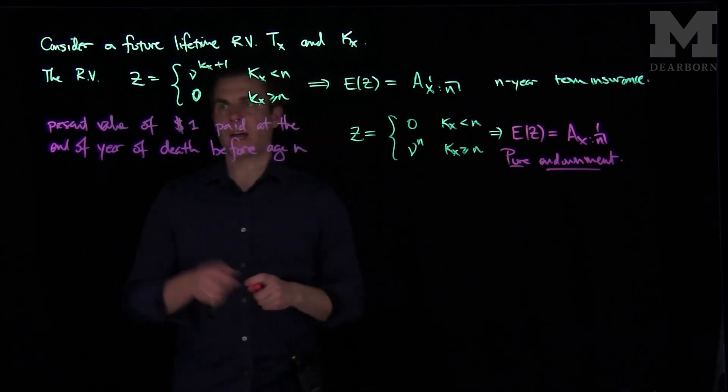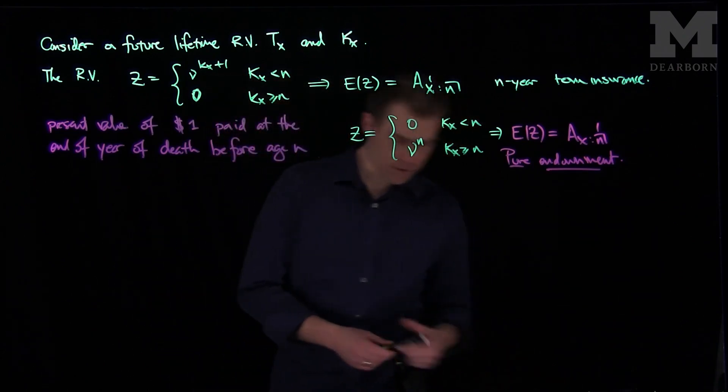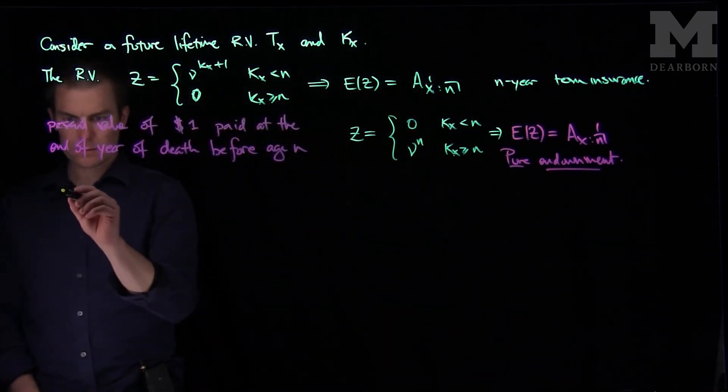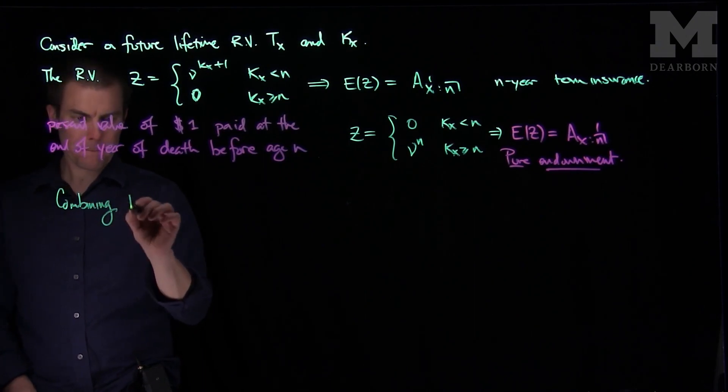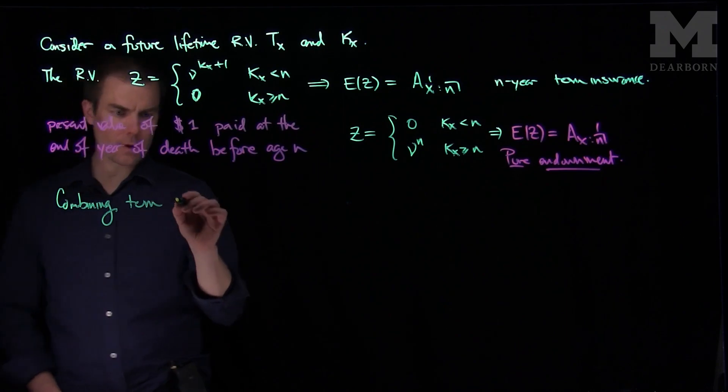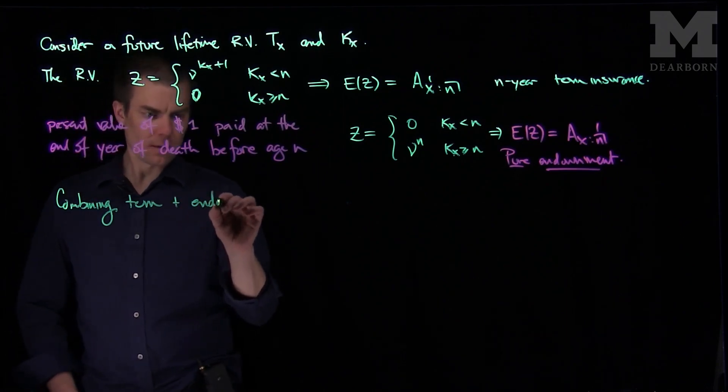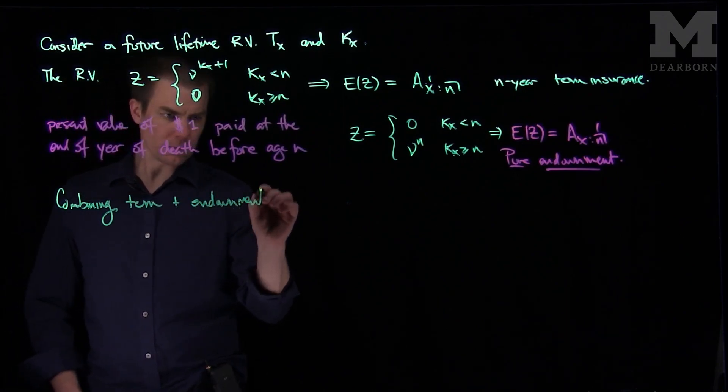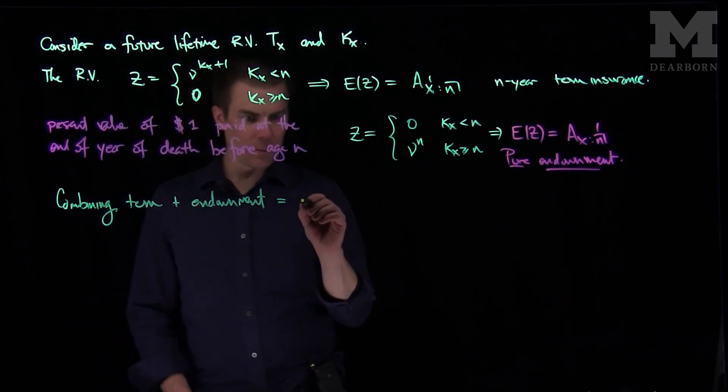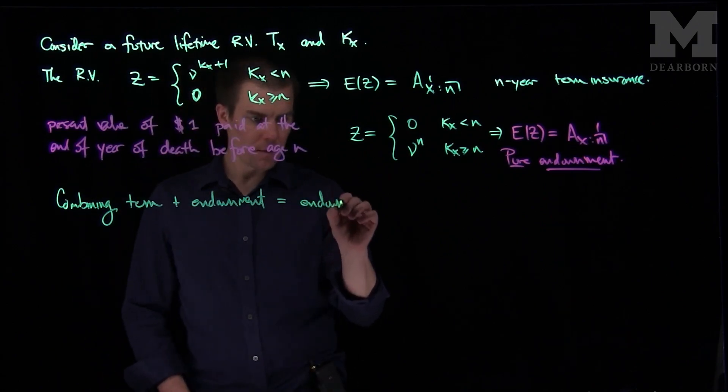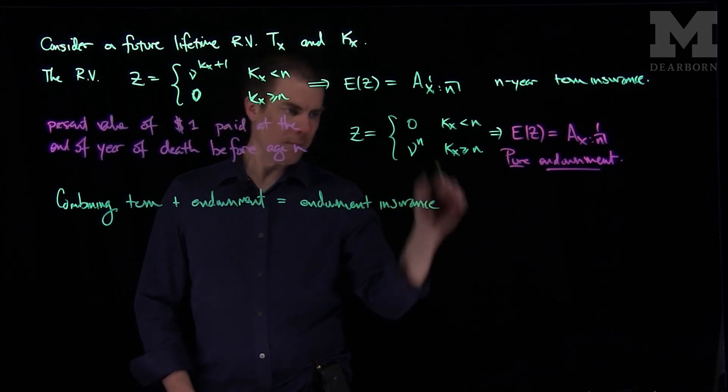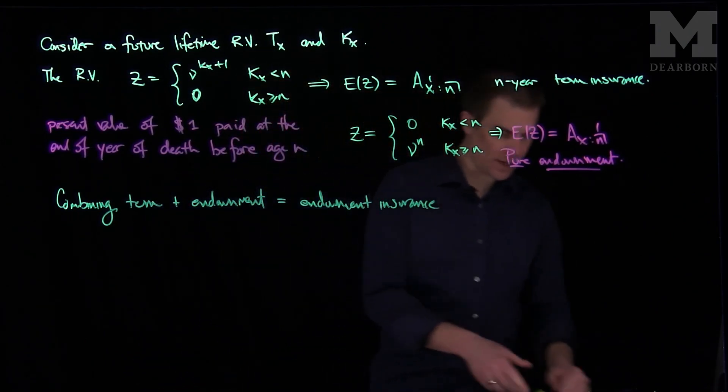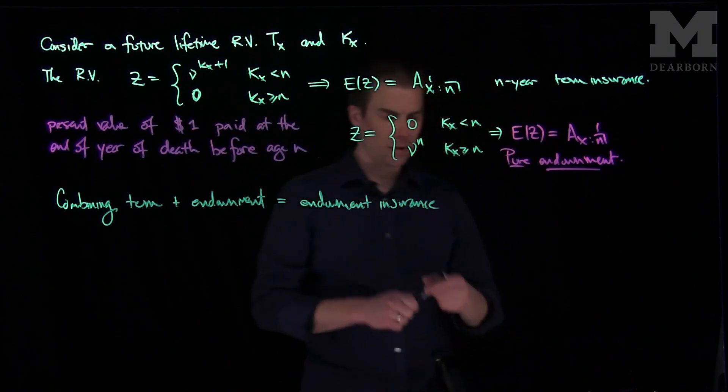If we combine a term policy with a pure endowment policy, so combining term plus endowment, we get something called endowment insurance. And so what will the present value for endowment insurance be? Well for endowment insurance, you'll have a random variable z.